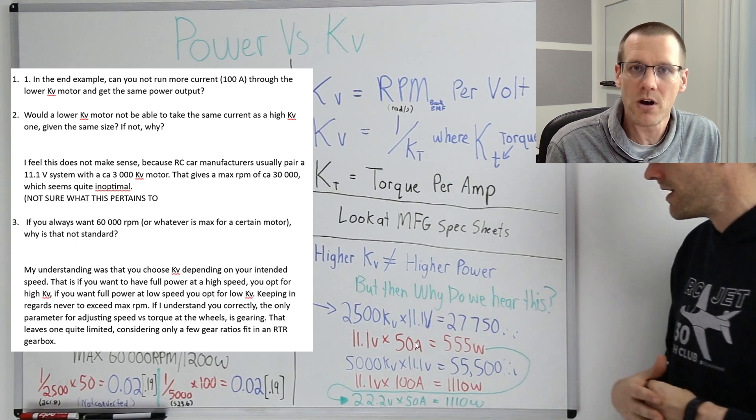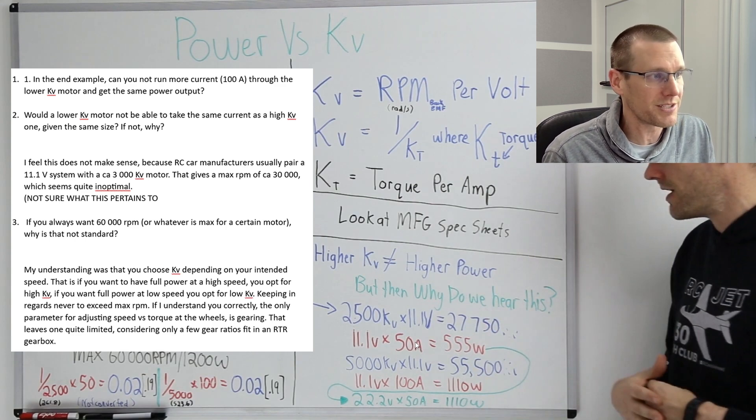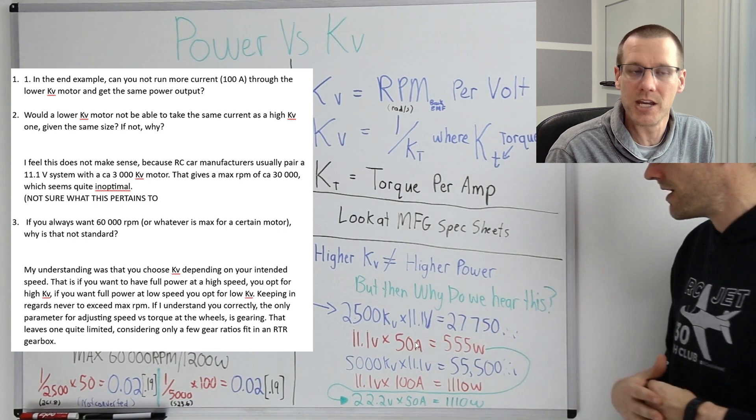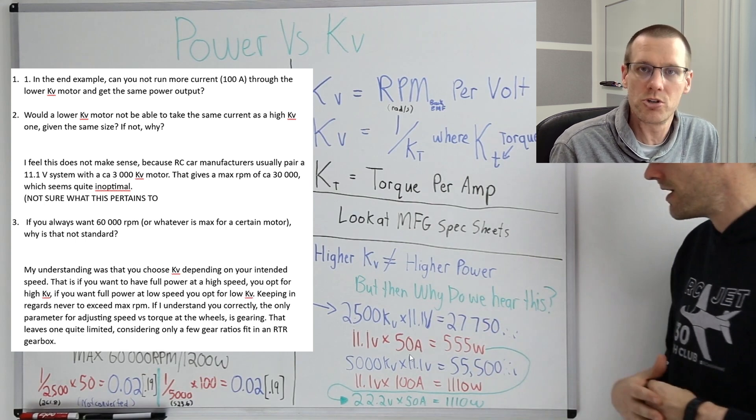If we try to go and up it to 100 amps, it would not like it all that much because there is limitations to motors. And we can get into that with the second question as to why there's limitations and what would happen if you actually try to exceed that limitation.